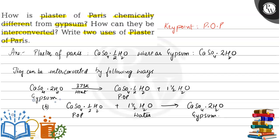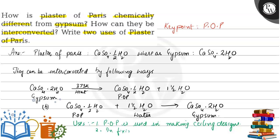Now the last part is the uses. Plaster of Paris is used in making ceiling designs. It is also used in fixing fractured bones.